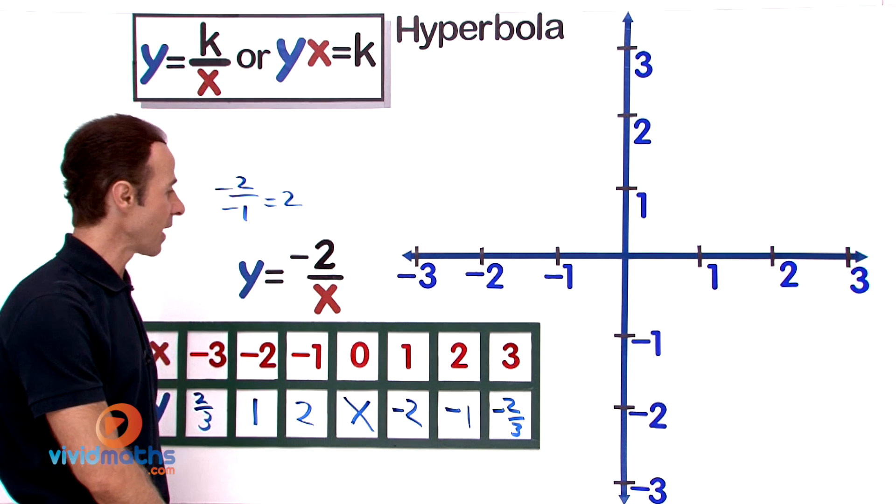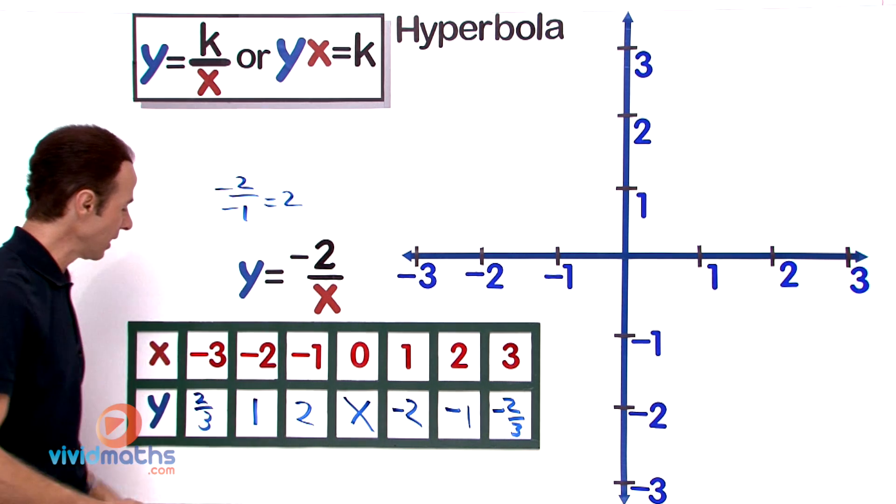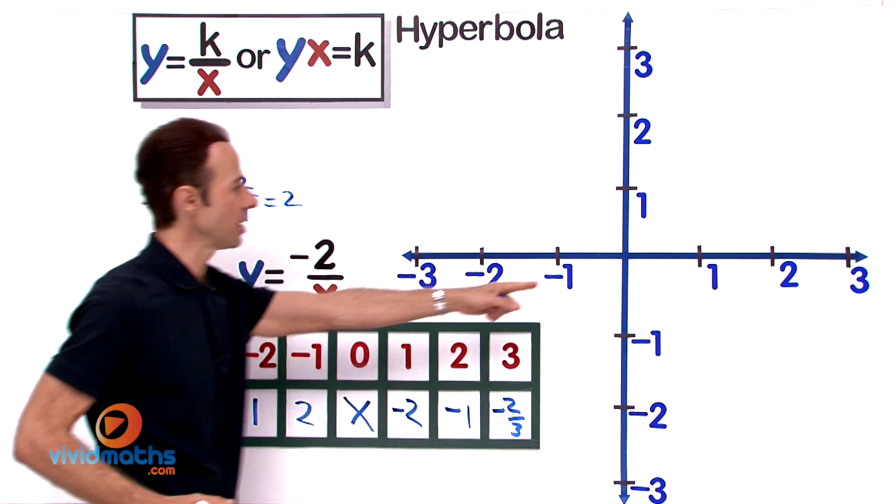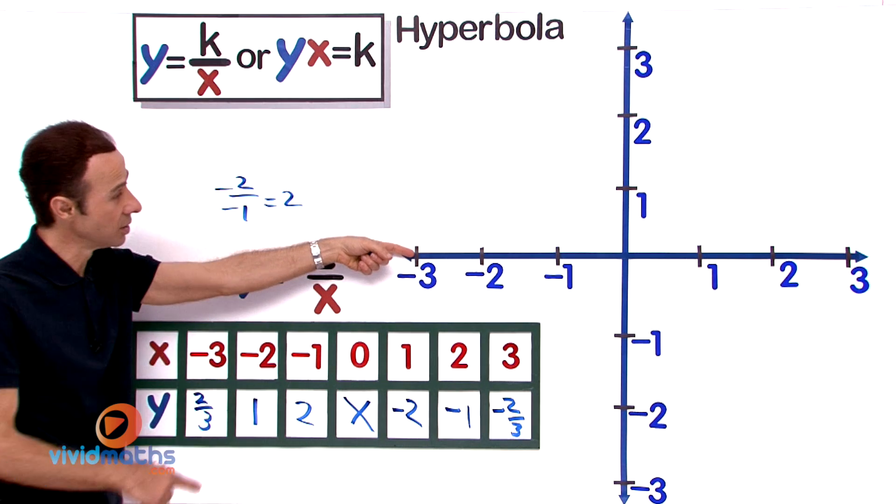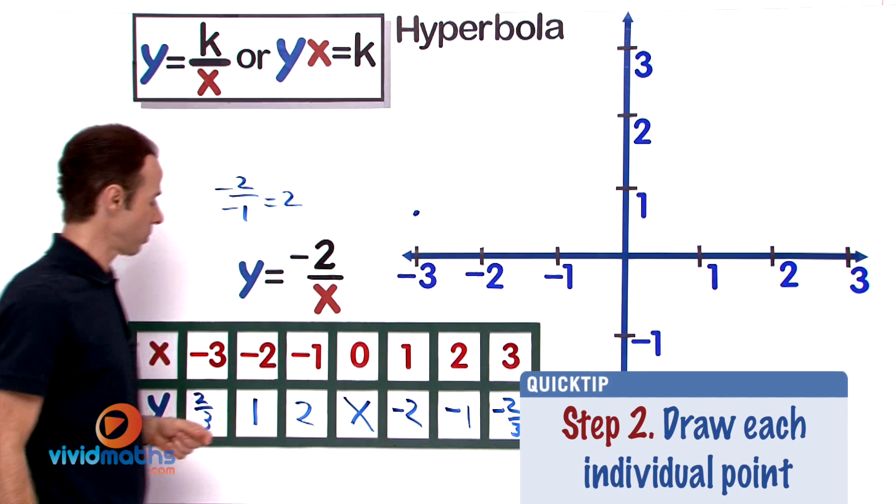Let's start to plot the points. The first one is negative 3 and 2 thirds. So negative 3 is here and it goes up positive 2 thirds, which will probably be about there—that's our first point. Then we have negative 2, positive 1. Then we have negative 1, 2—that's right there.